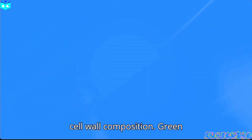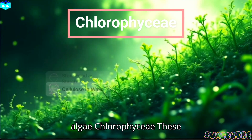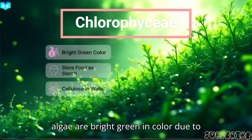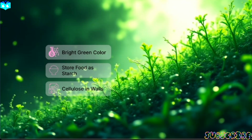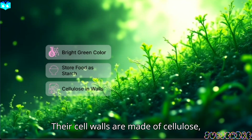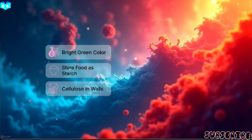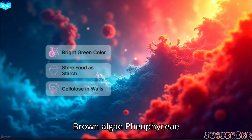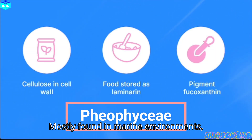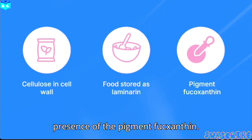Green algae (Chlorophyceae): these algae are bright green in color due to the presence of chlorophyll a and b. Their cell walls are made of cellulose and they store food as starch. Examples include Chlamydomonas, Volvox, and Spirogyra.